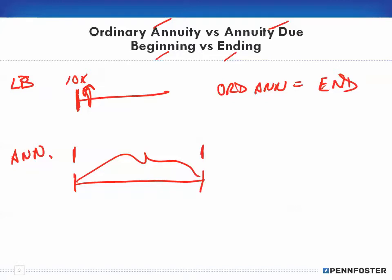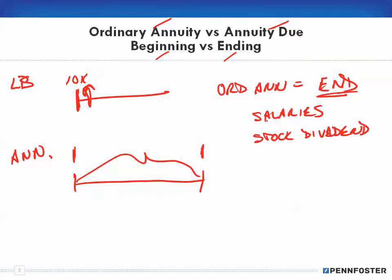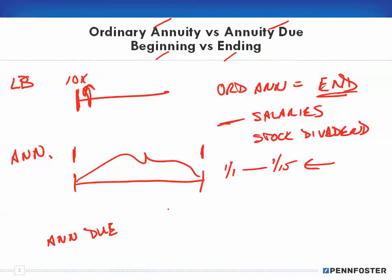Ordinary annuities tend to be money coming to you — like salaries or stock dividends. For example, if you're working from January 1st to January 15th, you get paid at the end of the period. That's why that would be like an ordinary annuity.